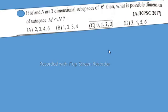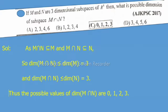of R^6, then what is the possible dimension of subspace M ∩ N? Solution: As M ∩ N ⊆ M and M ∩ N ⊆ N, so dim(M ∩ N) ≤ dim(M) = 3 and dim(M ∩ N) ≤ dim(N) = 3.